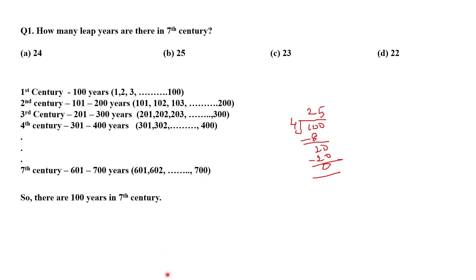I have told you right, the century year, how to find whether it is a leap year or not. If the century year is completely divisible by 400 then only it is a leap year. But 700 is not divisible by 400. So actually the leap year will be 25 minus 1 which is 24. There are 24 leap years. So option A is the correct option.